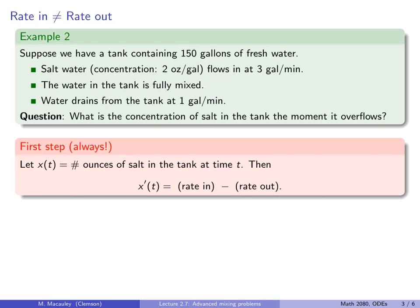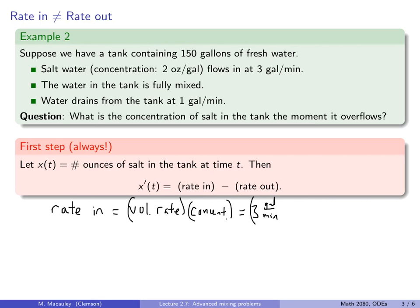We write a differential equation: x prime is the rate in minus the rate out — and this is the rate of salt, not the rate of water. The rate in is always the volume rate times the concentration. So that is 3 gallons per minute coming in, and the concentration is 2 ounces per gallon.